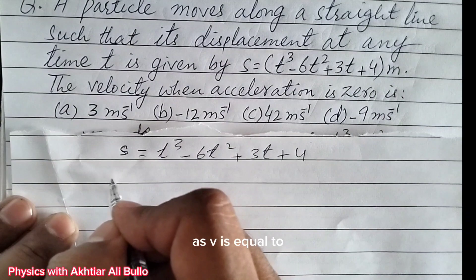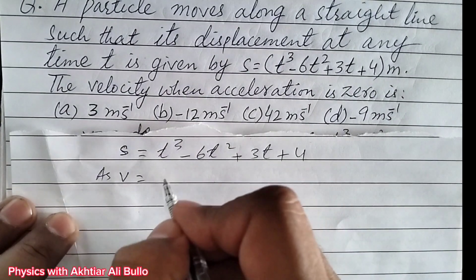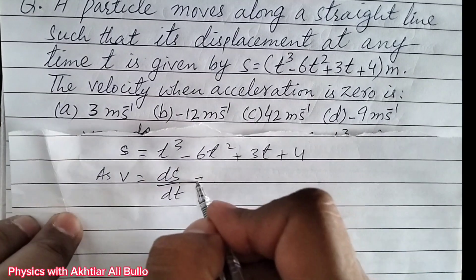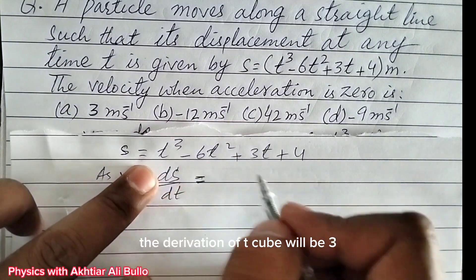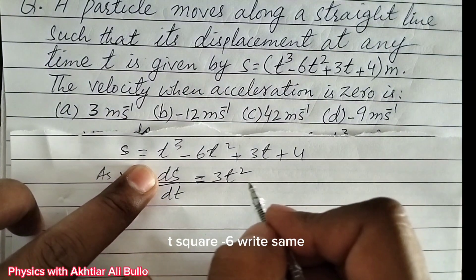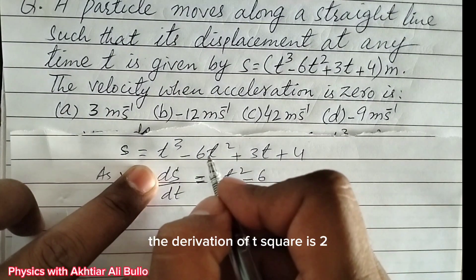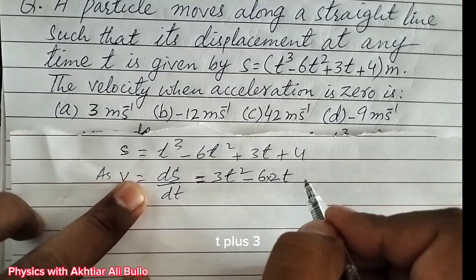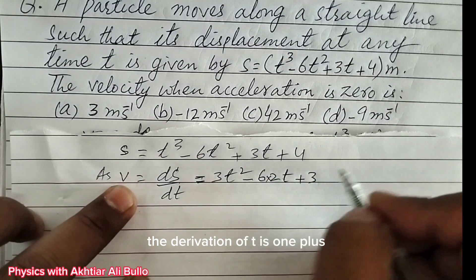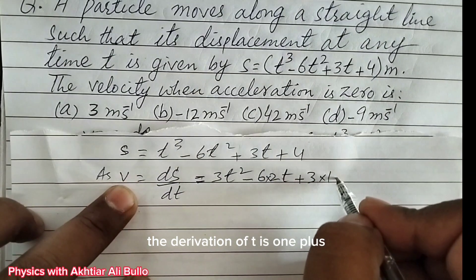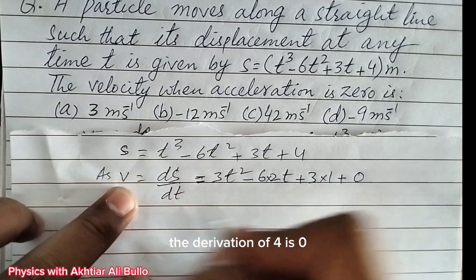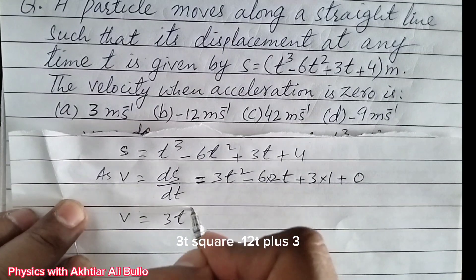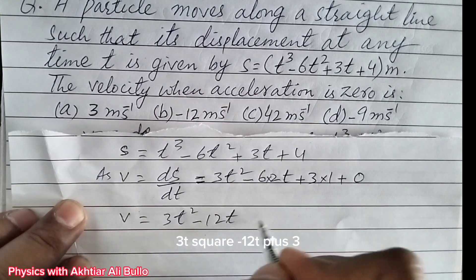Velocity v is equal to ds/dt. The derivative of t³ is 3t², minus 6 times the derivative of t² which is 2t, plus 3 times the derivative of t which is 1, plus the derivative of 4 which is 0. So v will be equal to 3t² - 12t + 3.